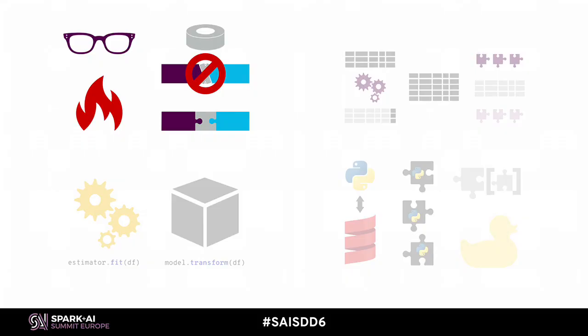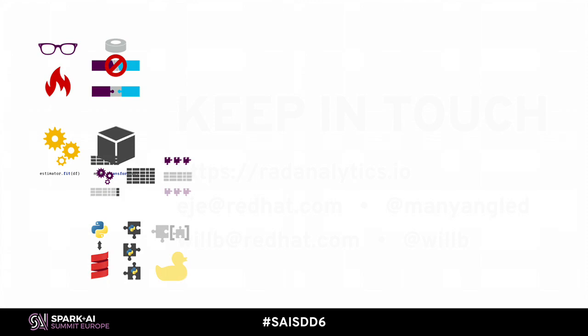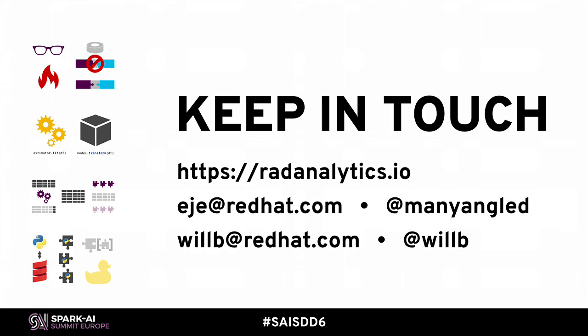In conclusion, we started by introducing a couple of principles: people are going to use your library in ways you don't expect, and you need to do things the right way. We talked about writing generic functions for parallel collections, covered details of implementing user-defined aggregates, and showed you how to expose functionality developed with Scala APIs like the user-defined aggregate API to PySpark users. Radanalytics.io is a community for intelligent apps and it's where our Silex library lives, so please check that out.